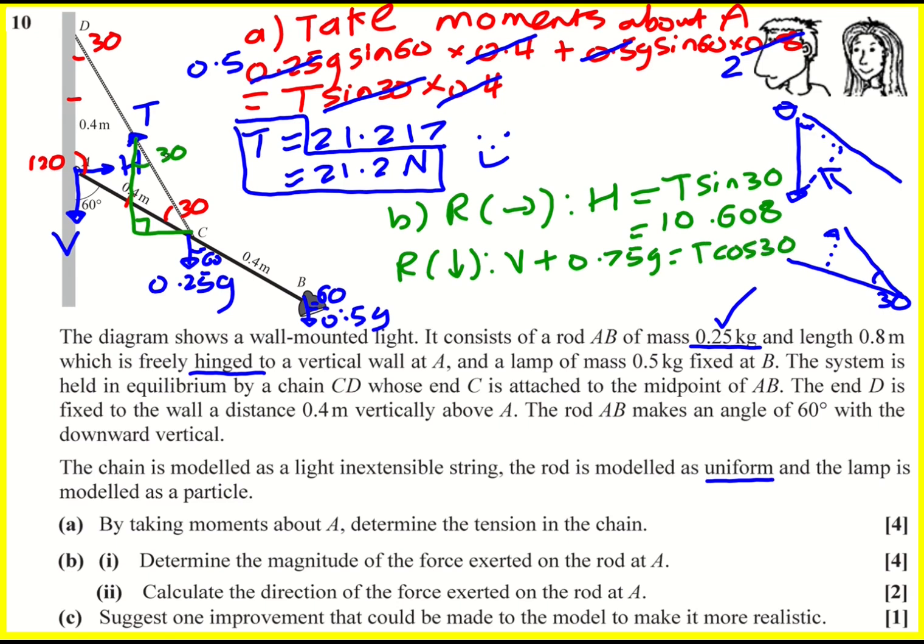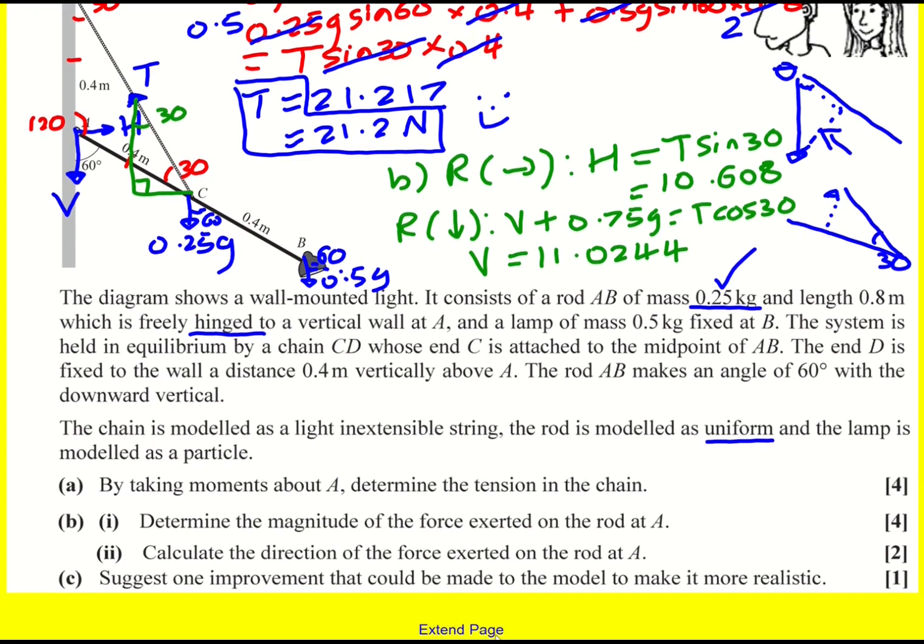Right, now the vertical resolving, let's resolve down. So V plus the two weights, that's going to be 0.75G, is going to equal T cos 30. Okay, the other one, the one that's like the adjacent of this green triangle, and then V ends up being, you have to minus the 0.75G, and we get 11.0244. Okay, we're in good shape now.